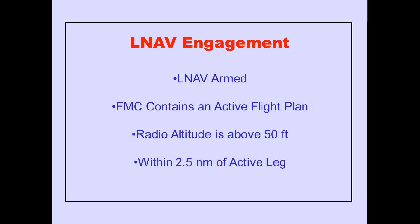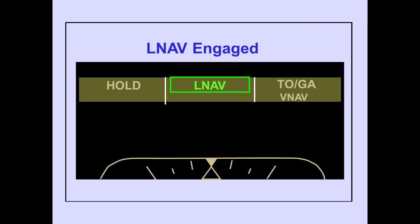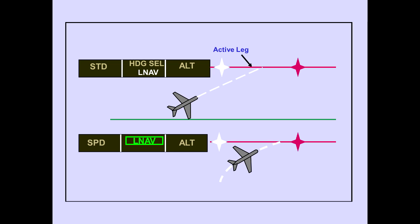To review, LNAV activation occurs if LNAV is armed, the flight management computer (FMC) contains an active flight plan, the airplane is at least 50 feet radio altitude above the ground, and the airplane is within 2.5 nautical miles of the active leg. When LNAV is engaged, LNAV is displayed on the PFD. If the LNAV switch is pushed outside these parameters, LNAV will arm and engage at the point to turn to intercept the active leg.